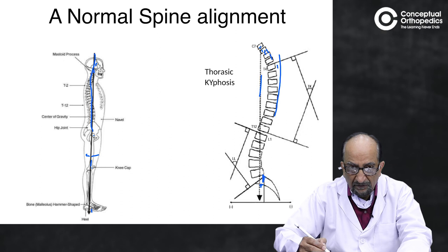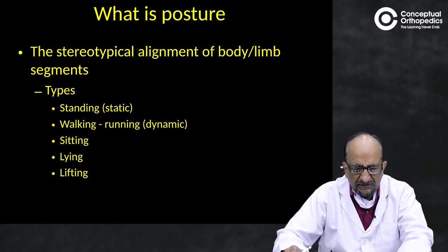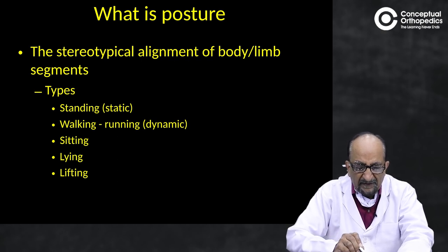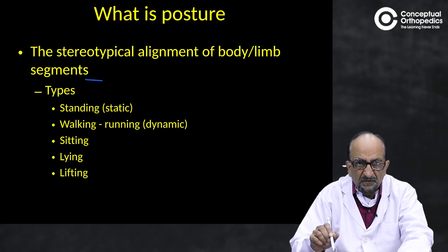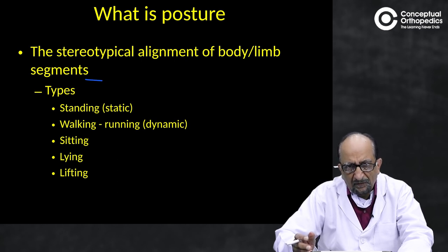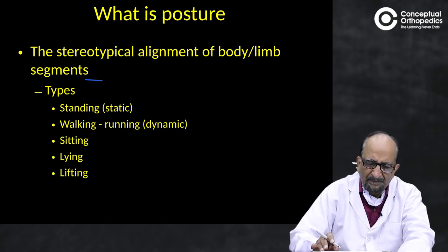When we try to correct balance, our endeavor is to maintain alignment within this range. Posture is the stereotypical alignment of body-limb segments — whether our limbs are hanging loose, whether we are standing erect, walking, running, sitting, lying, or lifting. The alignment of our body and different limbs constitutes posture, and our postural correction involves telling the patient to maintain proper posture in all physical states, so as not to load the spine to an extent where it causes pathology or damage.